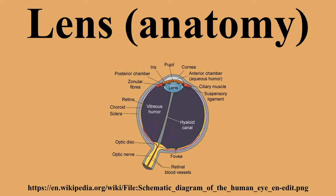The lens is more flat on its anterior side than on its posterior side. The lens is also known as the aquila crystalline lens. In humans, the refractive power of the lens in its natural environment is approximately 18 diopters, roughly one-third of the eye's total power.